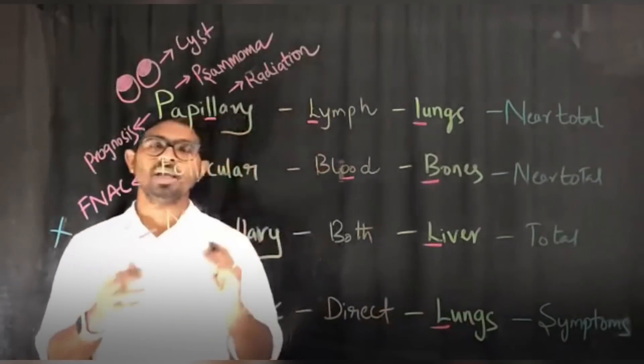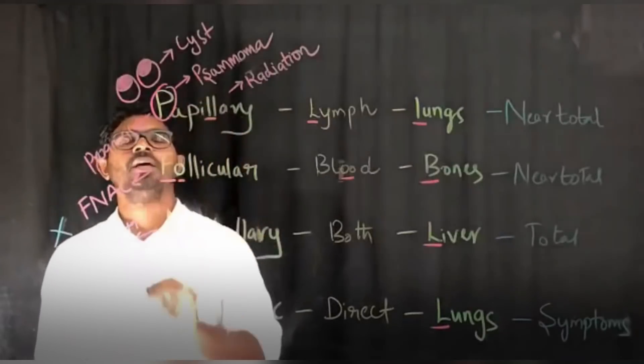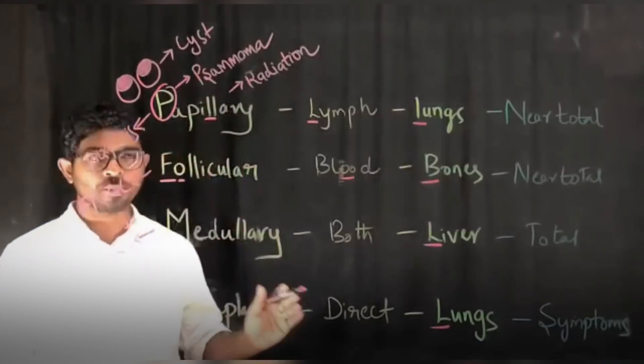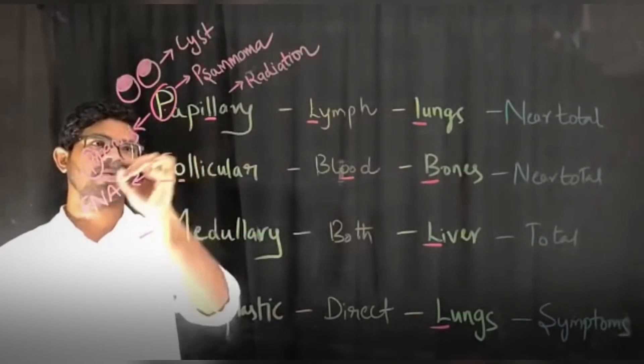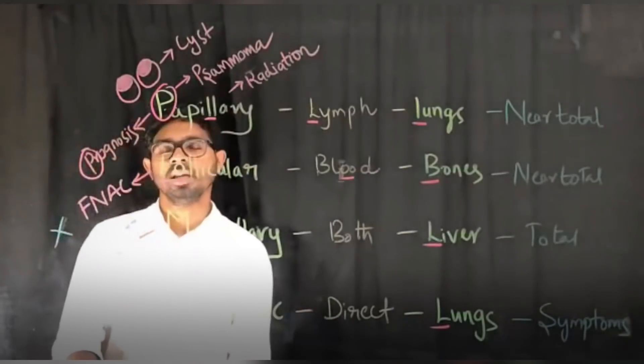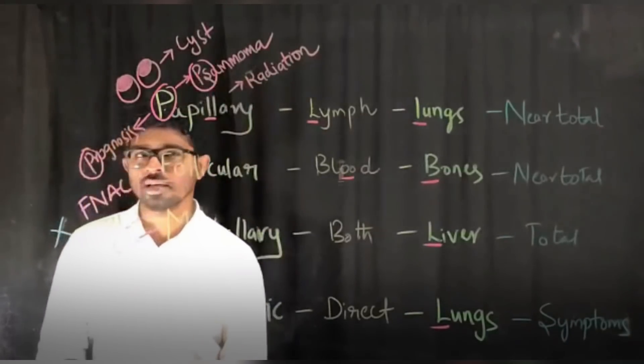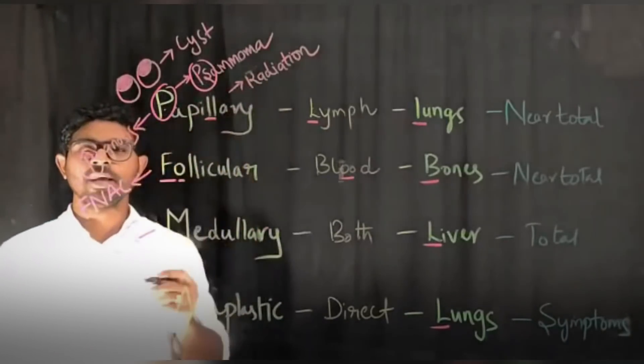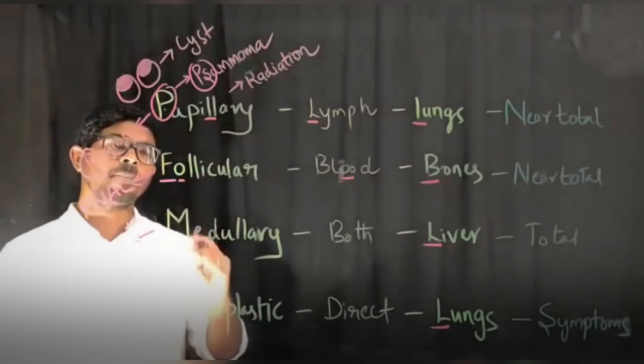Apart from this, there are many other commonly asked questions related to papillary. As already said, papillary is the most common thyroid carcinoma. Second, it has good prognosis - that's PP. It has psammoma bodies - that's again PP. So papillary: most common, good prognosis, psammoma bodies are seen.